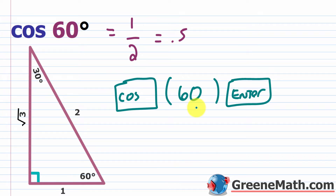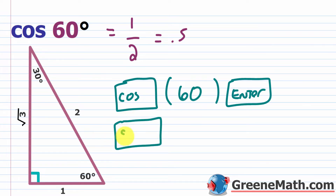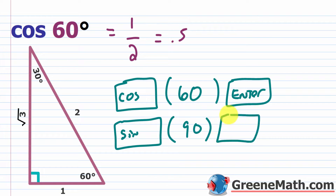It's very important if you're not getting the right answer to investigate and figure out what's going on. A common thing books tell you to do is always hit sine of 90 degrees in your calculator before you start working. Hit the sine key, put 90 inside the parentheses, and hit enter. That should produce a value of 1. If you get a value like 0.894, you know you're in radian mode and you need to switch it.